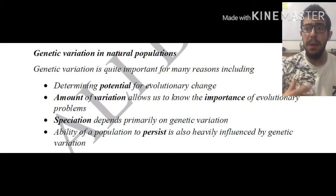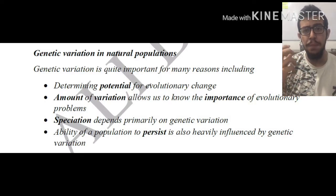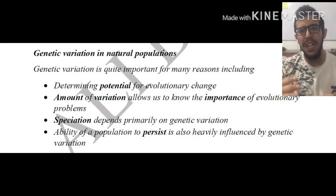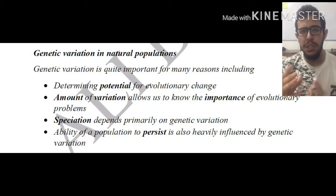Speciation depends primarily on genetic variation, because if the organisms within a population are going to be very close in terms of genetic makeup, there is no reason for speciation to happen in the first place.